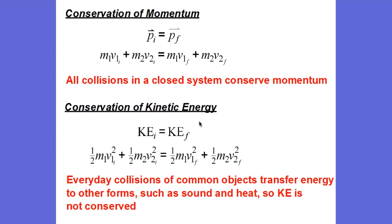It might also be possible that kinetic energy is conserved as well. If that is the case, the initial kinetic energy before the collision equals the final kinetic energy after the collision. We quantify that as one-half M1V1 initial squared plus one-half M2V2 initial squared equals one-half M1V1 final squared plus one-half M2V2 final squared. In everyday collisions of common objects, kinetic energy is not conserved because energy is transferred to other forms, such as sound and heat.